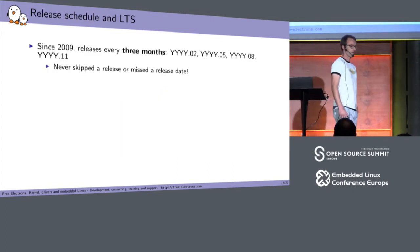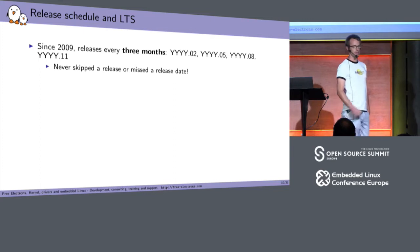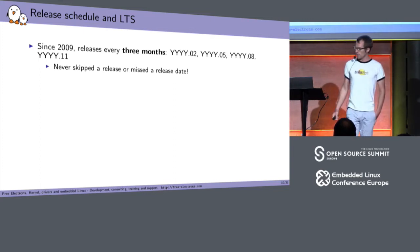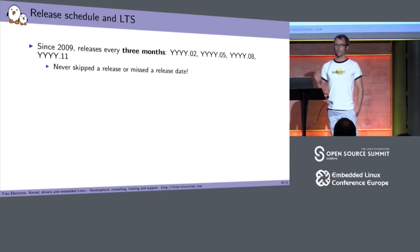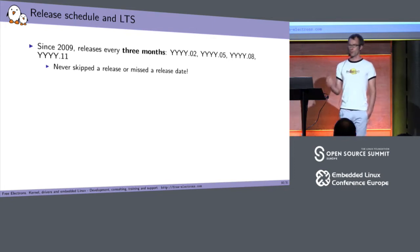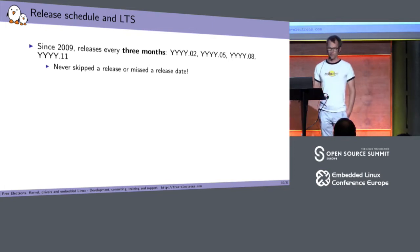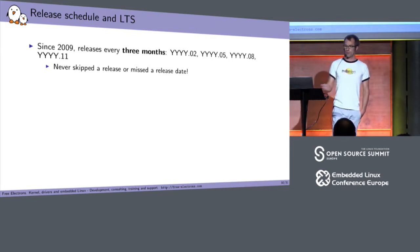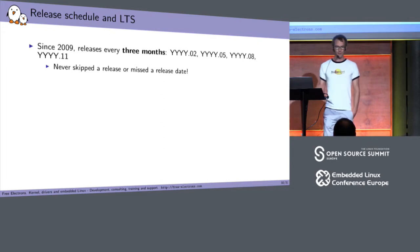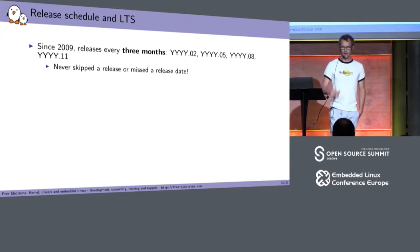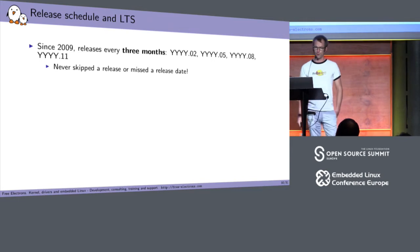Speaking of the release schedule: since 2009 we've been doing releases every three months — one in February, one in May, one in August, and one in November. We've never skipped a release or missed a release date by more than a few days at most, which is pretty impressive for a purely open source driven project.